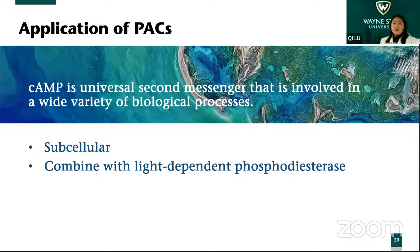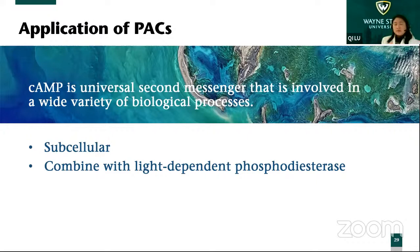Cyclic AMP is a universal second messenger involved in a wide variety of biological processes — like learning, cell mobility, acute reaction signaling, information processing, and gene expression. So subcellular modulation of cyclic AMP will be more important, as mentioned in the previous article using subcellular targeting sequences, which might be quite important.